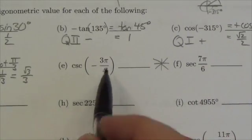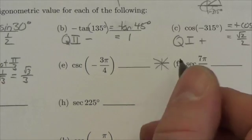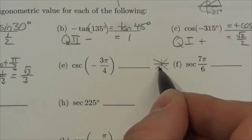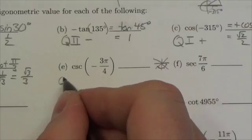Negative 3 pi over 4 means I'm starting on the positive x-axis, I'm rotating this way, 1, 2, 3 pi over 4s, that puts me in quadrant 3.